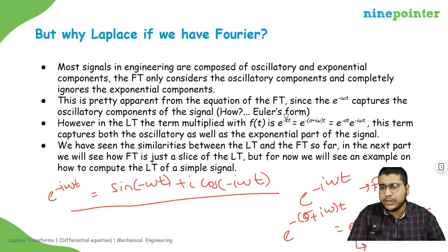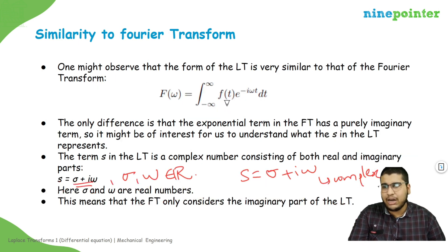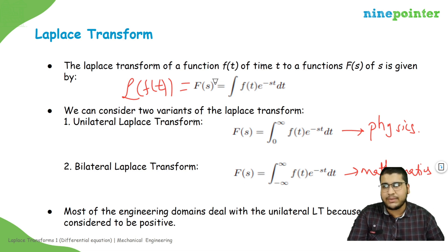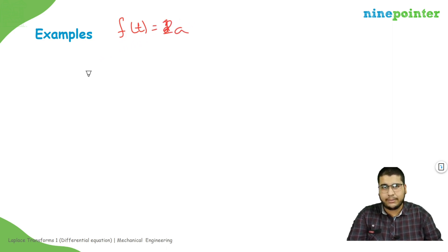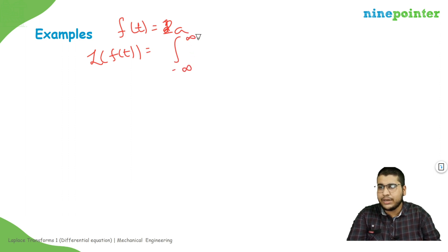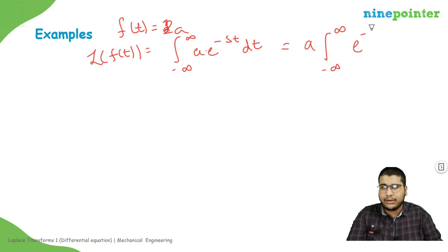Now let's see how to apply this equation and compute the Laplace transform of some basic signals. Consider that f of t is just a constant a. Then the Laplace transform of f of t is the integral of a times e to the minus st dt. Since a is a constant, I can pull it out, and let's use the unilateral transform going from zero to infinity.